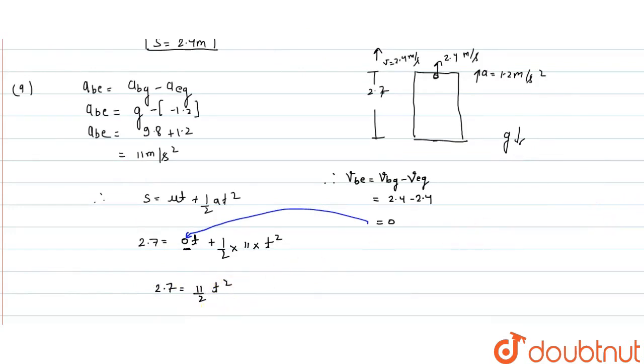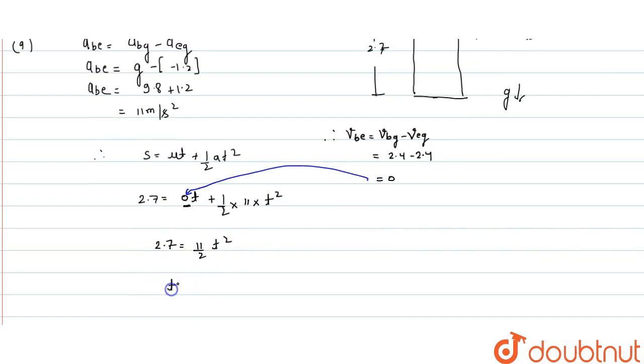2.7 equals 11 by 2 t square. T equals under root of 2.7 into 2 divided by 11.